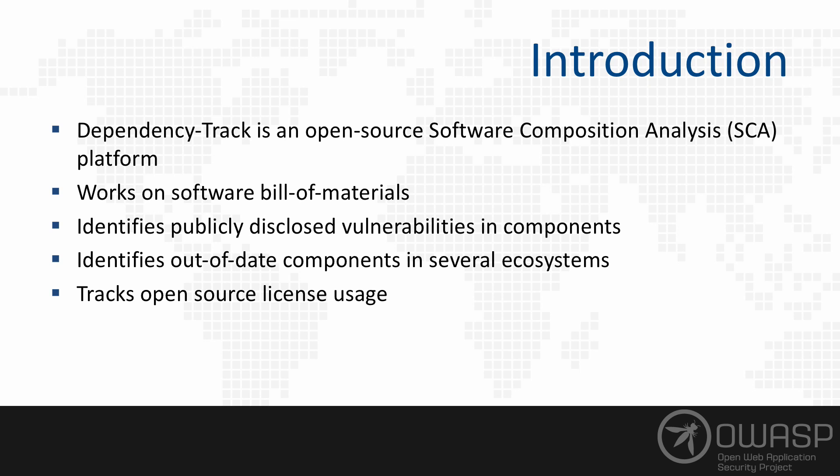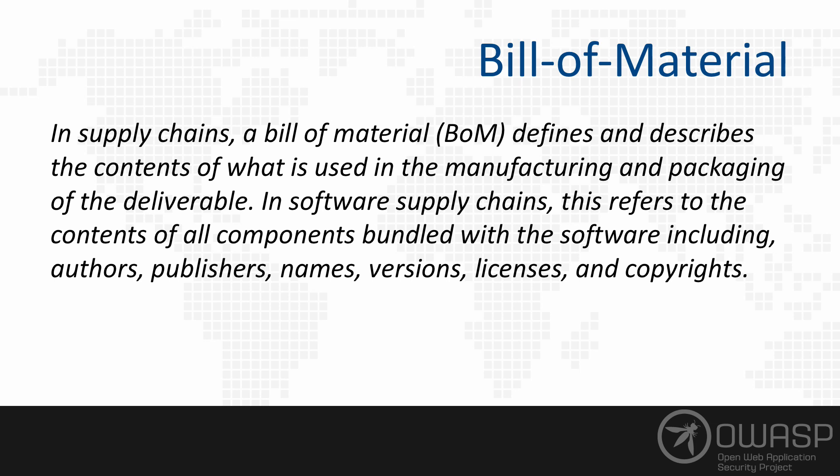Because we're tracking a lot of different types of metadata about components, one piece of that data is license. And although not a security issue, it does represent certain risks to many organizations. So what is a Bill of Materials? In supply chains, a Bill of Materials simply defines and describes the contents of what is used in the manufacturing and packaging of the deliverable. In a software supply chain, this refers to the contents of all the components delivered with that software, including all the metadata describing the authors, publishers, who made it, what version it is, license, copyrights, etc.